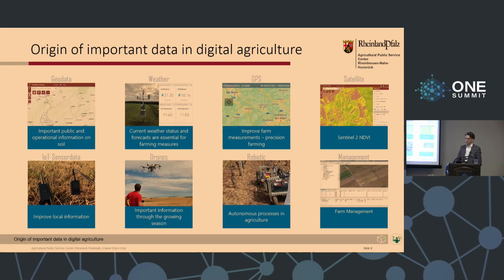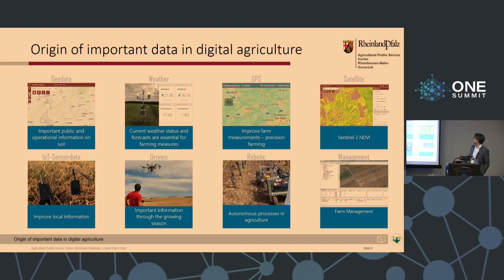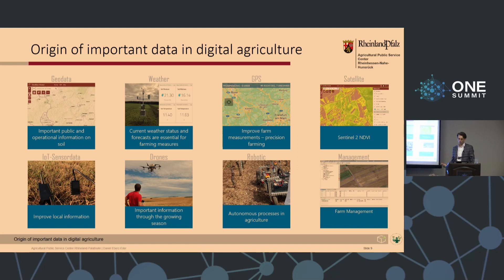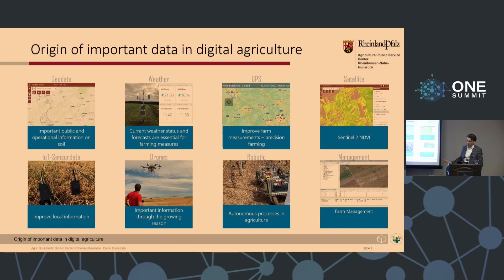Where does the important data in agricultural production come from? We see geodata — public and operational information on soils or weather data. Current weather status and forecasts are essential for farmers. GPS can improve farm measurements like precision farming. Satellite images like Sentinel data, or IoT sensor data, improve local information. Drones provide important information through the growing season, or information on the presence of deer before mowing. Robotics opens the possibility for autonomous processes in agriculture and management — very important for farmers.